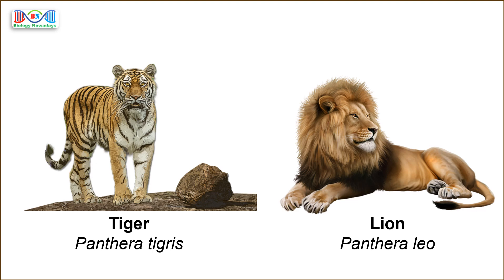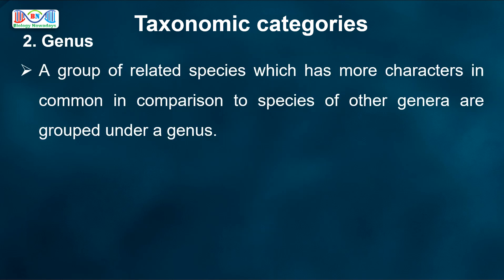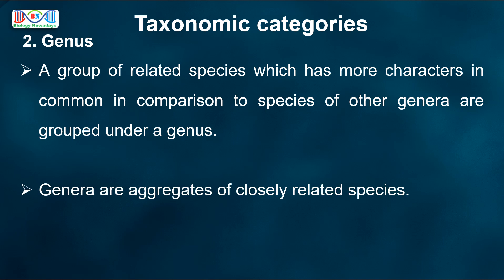One should be able to distinguish one species from another closely related species based on their distinct morphological differences. For example, in the case of tiger and lion, you can easily find distinctive morphological differences. Each genus may have one or more specific epithets representing different organisms but having morphological similarities. A group of related species, which has more characters in common in comparison to species of other genera, are grouped under a genus. We can say that genera are aggregates of closely related species.